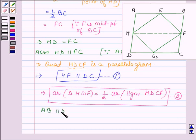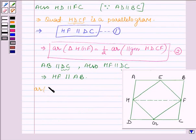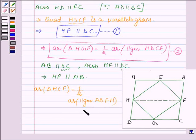Now AB is parallel to DC since opposite sides of a parallelogram are parallel and equal. Also from equation 1 we have HF parallel to DC. Since two lines parallel to the same line are parallel to each other, this implies HF is parallel to AB. Now applying the same key idea on triangle EHF and parallelogram AHFB, which are on the same base HF and between the same parallel lines AB and HF, we can write: area of triangle HEF equals half the area of parallelogram ABFH. Let this be equation number 3.